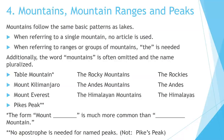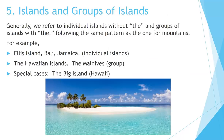Note: the form Mount blank is much more common than blank mountain. No apostrophe is needed for named peaks — we don't write Pike apostrophe s peak. Number 5: Islands and groups of islands. Generally, we refer to individual islands WITHOUT THE and groups of islands WITH THE, following the same pattern as mountains. For example: Ellis Island, Bali, Jamaica — these are all individual islands. The Hawaiian Islands, The Maldives — these are groups of islands.